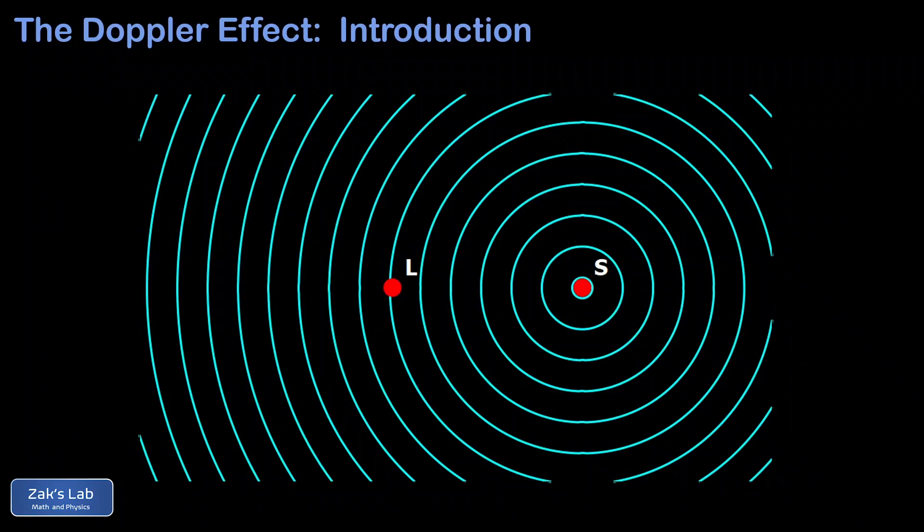You may have noticed that while driving your car past a loud source of music, you can hear the pitch of the music changing — higher on the way toward the sound source and lower as you move away. This is one example of the Doppler effect.